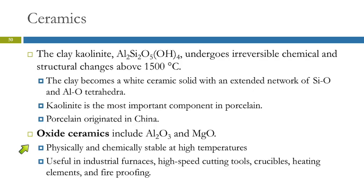There are also oxide ceramics, which do not have silicon in them. These include aluminum oxide and magnesium oxide. They're physically and chemically stable at really high temperatures, making them useful in industrial furnaces, high-speed cutting tools, crucibles, heating elements, and fireproofing.